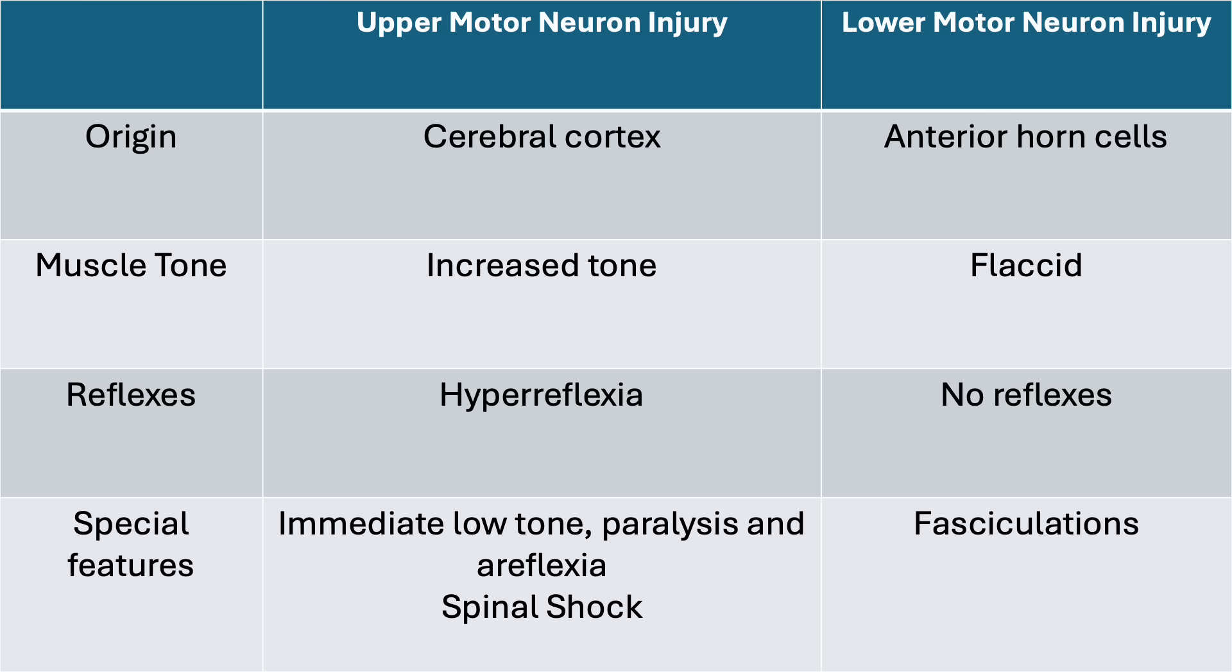As far as reflexes go, with an upper motor neuron injury, you have lost inhibition. So, therefore, you will be hyperreflexic. In the case of a lower motor neuron injury, you will have no reflexes. You have lost the motor neuron that causes reflexes.